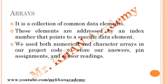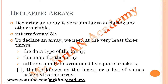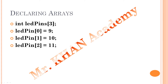How to declare an array: declaring an array is very similar to declaring any other variable. First define the data type — `int`, name of array `myArray`, then in brackets define the size — how much memory should be allocated. To declare an array we need at least three things: the data type, the name of the array, and either a number in square brackets or initialized values. That number is known as the index.